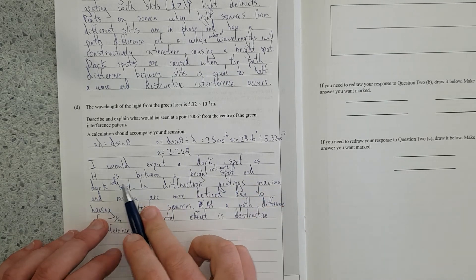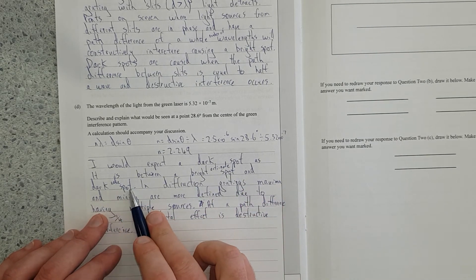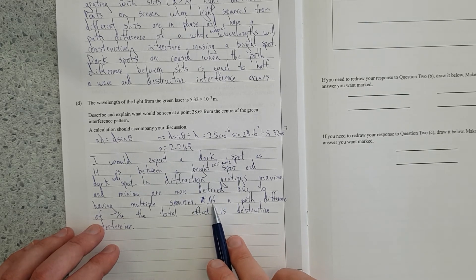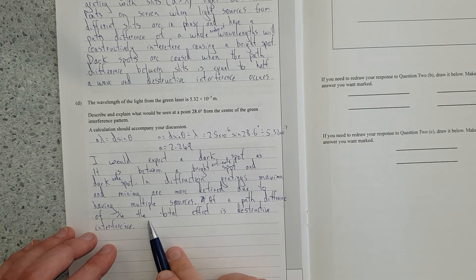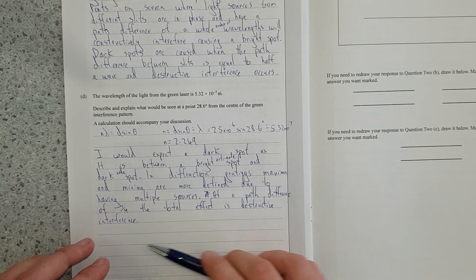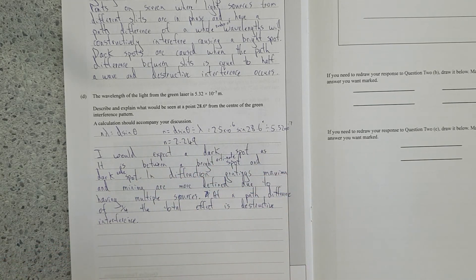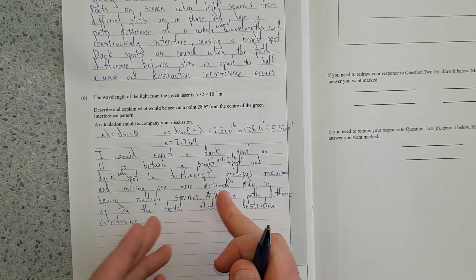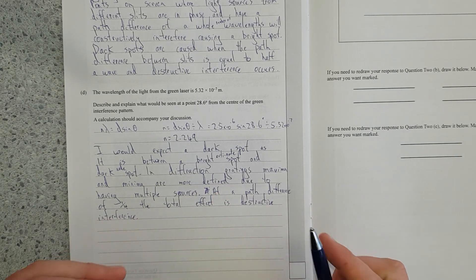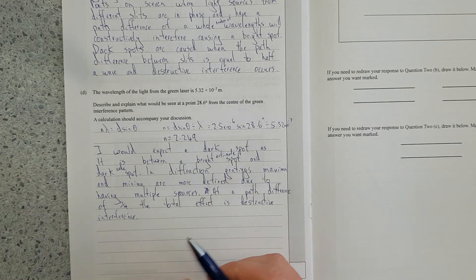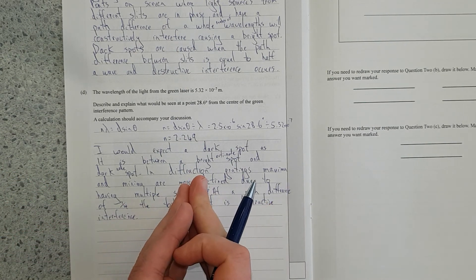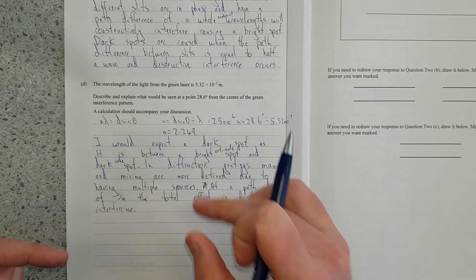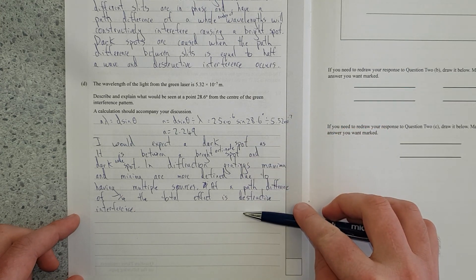I would expect a dark spot as it is between a bright spot and a dark node spot. In diffraction grading, maximum and minima are more defined due to having multiple sources. At a path difference of a quarter, the total effect is destructive interference. If you have a diffraction grading, the whole pattern is way more defined. The bright spots are way brighter because there's more constructive interference happening at those points because there's more sources landing there.